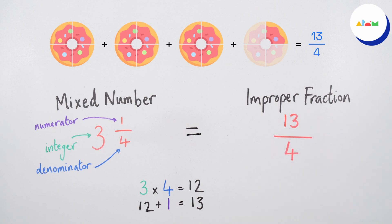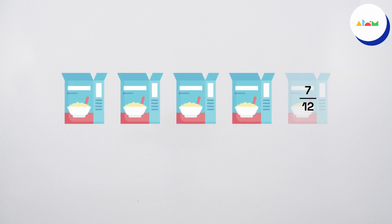Let's have a go at a question on converting to an improper fraction. Dina has four and seven twelfths of her favorite breakfast cereal left. Each morning she eats one twelfth of the cereal with milk. She wants to know how many twelfths are in four and seven twelfths, so she can calculate how many bowls she can eat before she runs out of cereal. What is four and seven twelfths as an improper fraction?